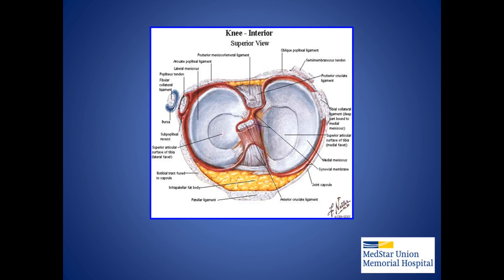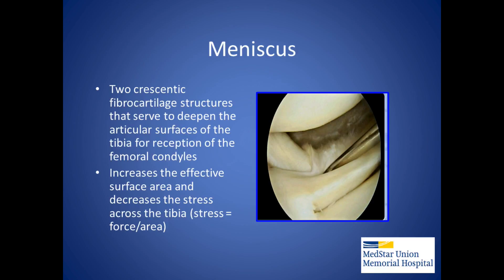The lateral meniscus is more semicircular in shape than the medial meniscus. The medial and lateral menisci serve to deepen the articular surface of the tibia for reception of the femoral condyles and increase the effective surface area, thus decreasing the stress across the tibia.